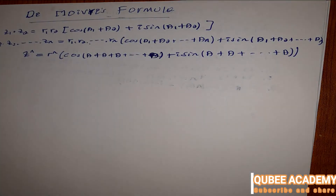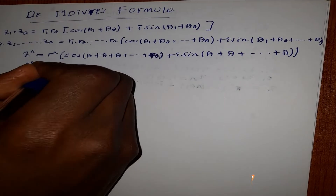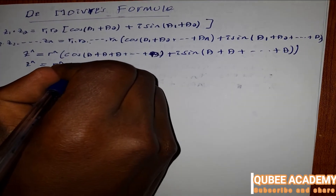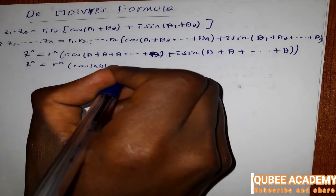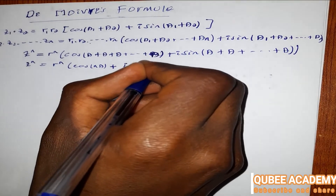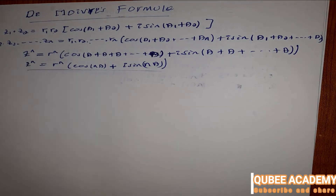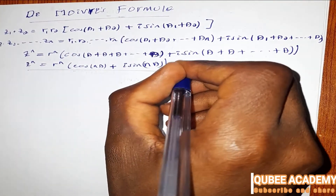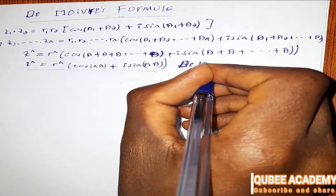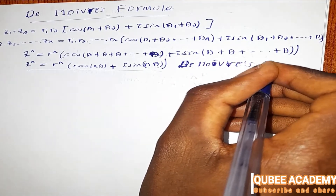So, we have the complex number z to the power of n. Z to the power of n is equal to r to the power of n, times the cosine of n times theta, plus i times sine of n times theta. This is the first step, and the whole formula for z to the power of n.